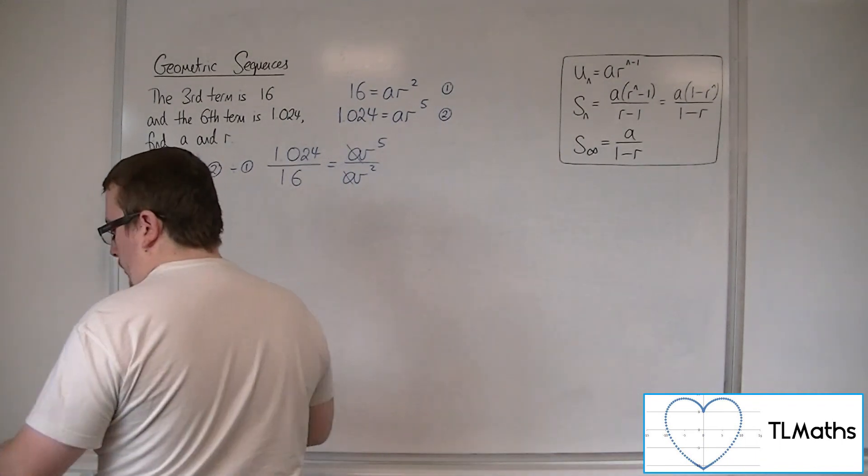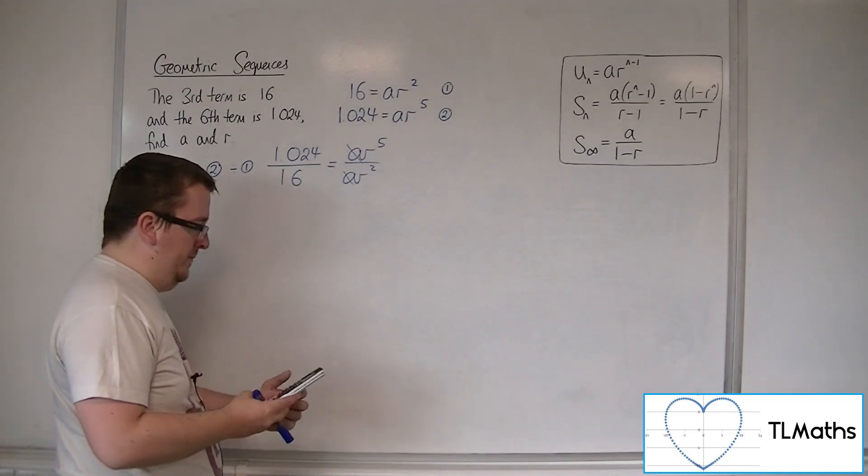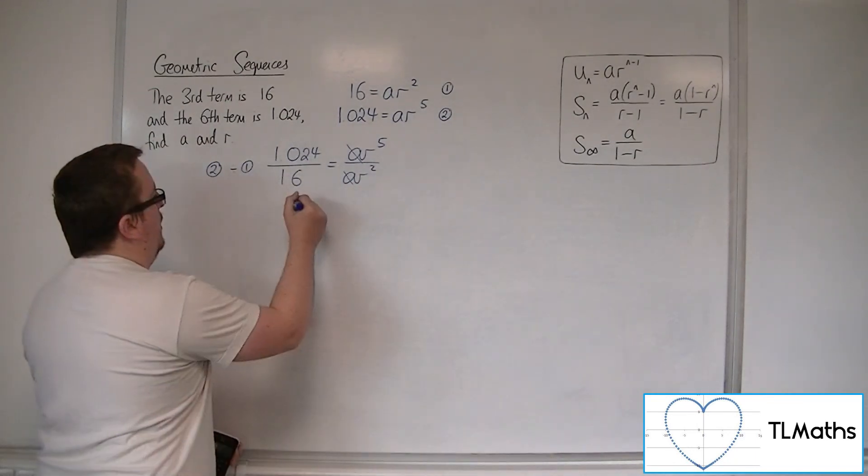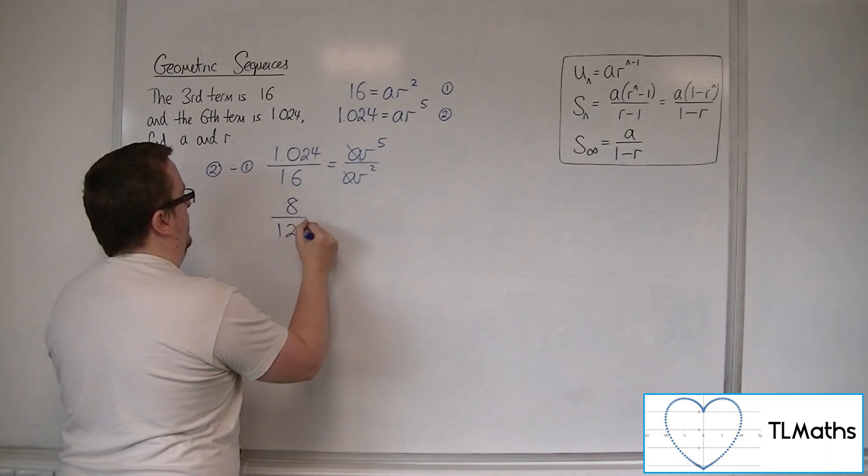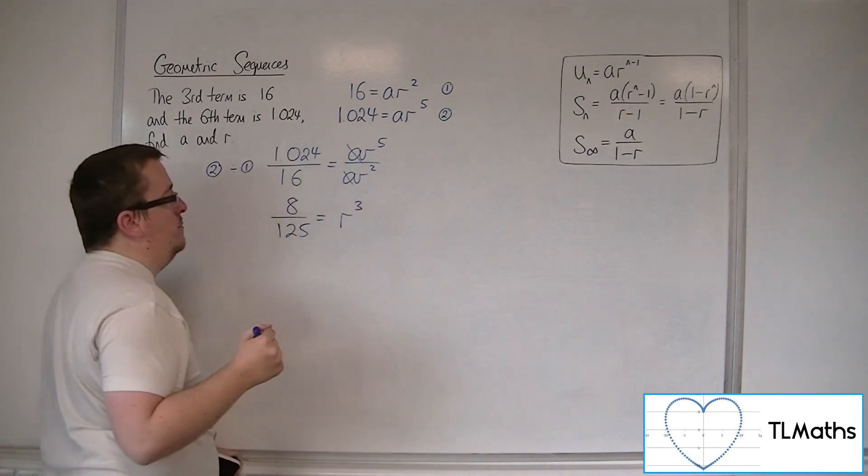We've got this 1.024 over 16. Let's see what the calculator makes of that. That's 8 over 125, simplified. And we've got this r to the 5 divided by r squared, which is r cubed.